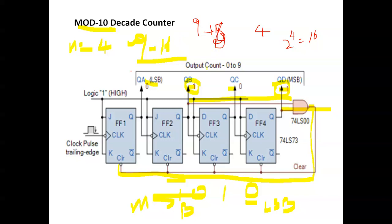For mod 12: the binary value of 12 is 1,1,0,0 (since 8 + 4 = 12). This is the MSB side and this is the LSB side. The LSB bits are 0,0, and the 1s appear at QC and QD. QC and QD are connected to the input of the NAND gate, and the output is given to the clear of every flip-flop. That gives a mod 12 counter. Similarly, mod 13 up to mod 16 can be implemented the same way.